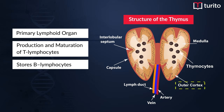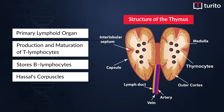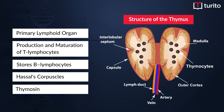The outer cortex of the thymus gland shows presence of cells called thymocytes, which are the lineage cells of T lymphocytes. We also have B lymphocytes stored in the thymus gland. Apart from this, we also have flattened epithelial cells called Hassall's corpuscles present in the thymus.